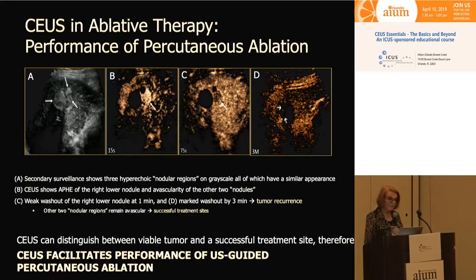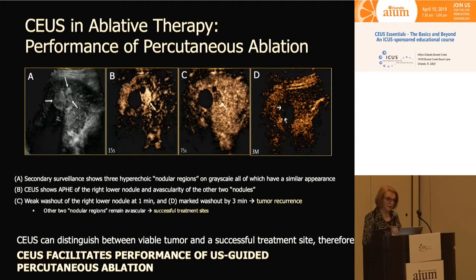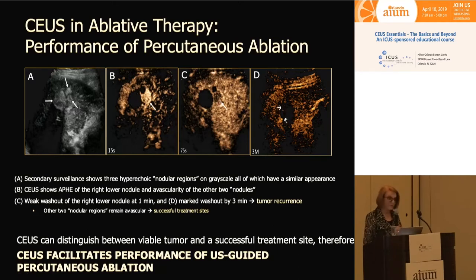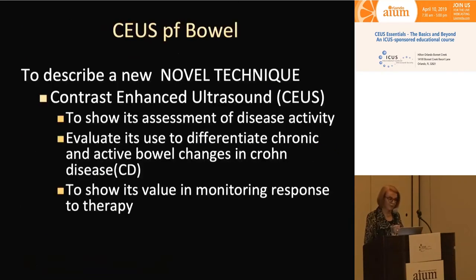Looking at another valuable case: a patient who's had several procedures for HCC in the past. On grayscale, we see not one, not two, but three echogenic nodules in this liver — very hard to tell what's abnormal. When we do CEUS, we can see easily that one nodule is hyper-enhancing. The hyper-enhancing nodule then shows washout — we know that's HCC — and that specific nodule can be targeted for re-ablation.